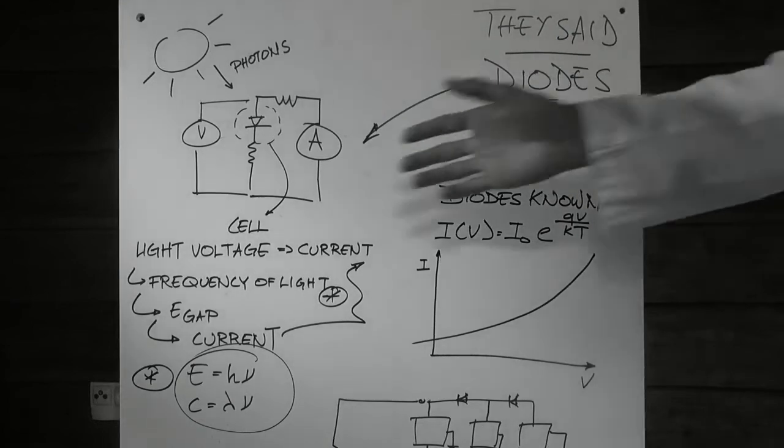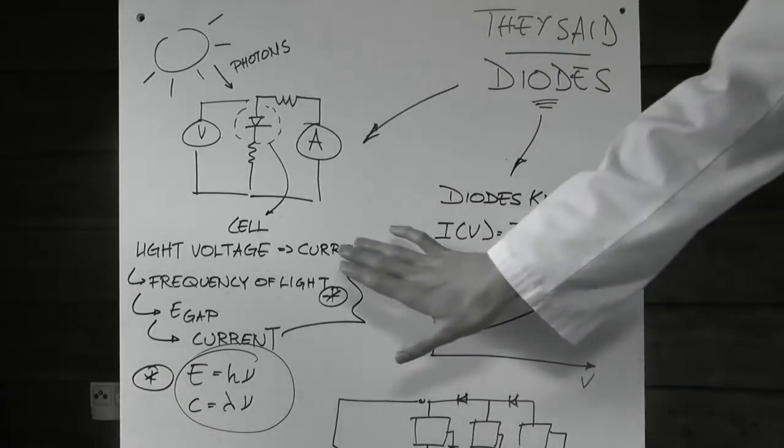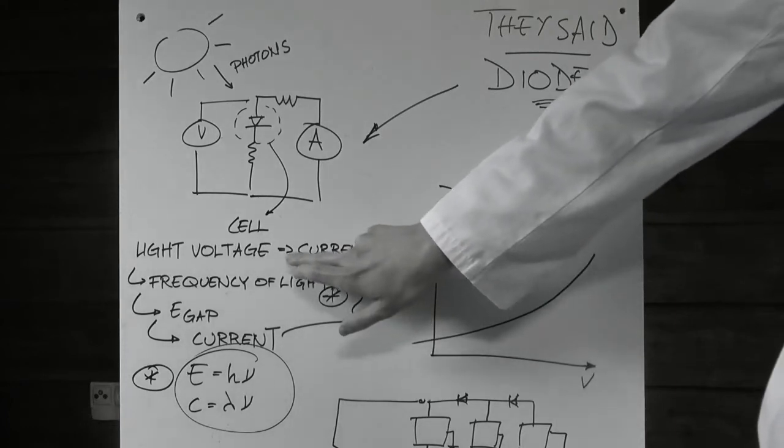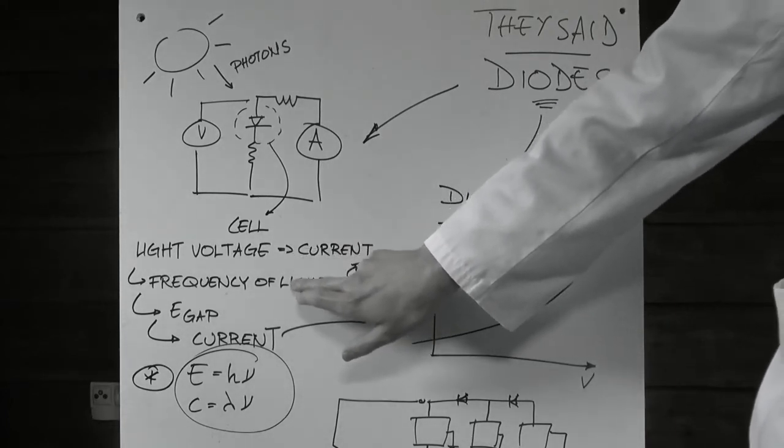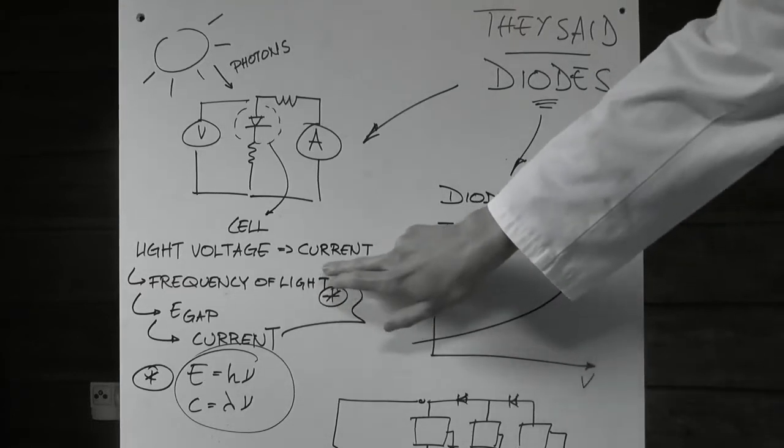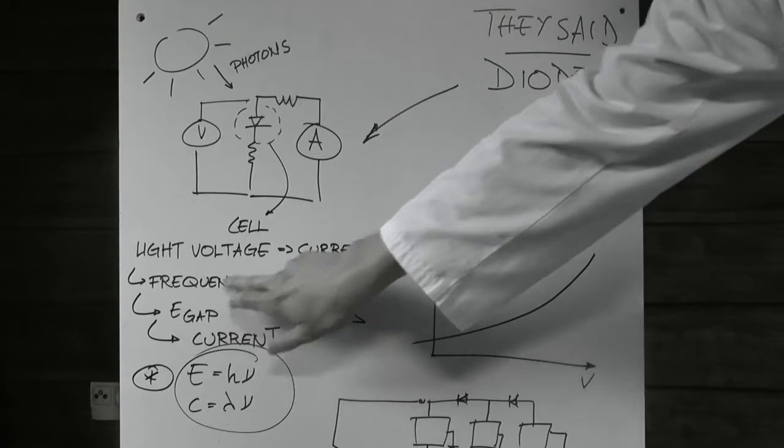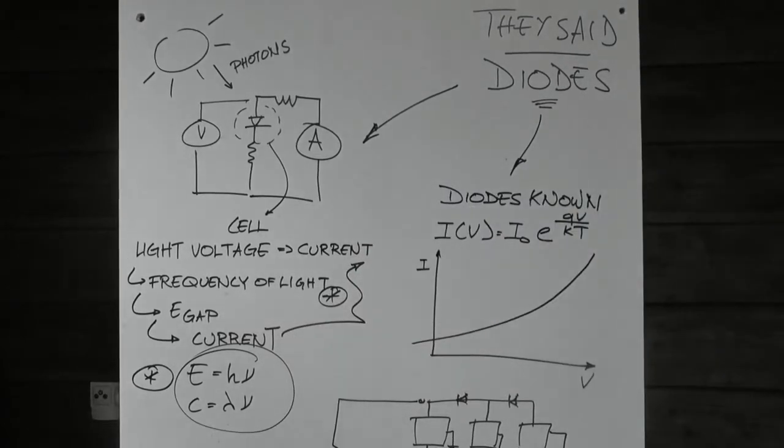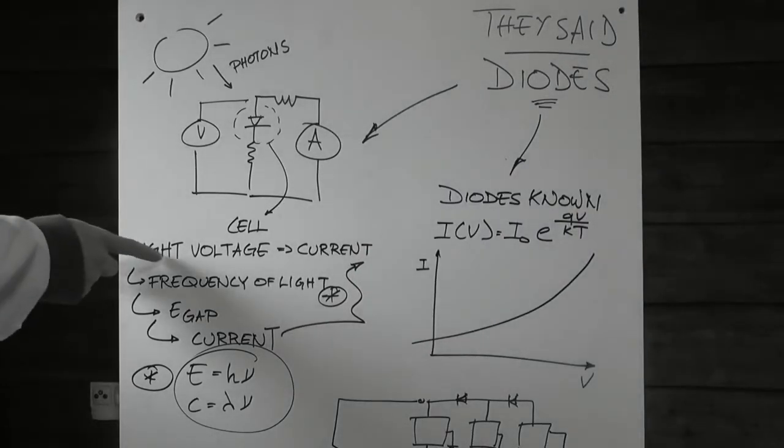In fact, according to me, you have to lighten it to produce current. Well, to make it work, we need a light voltage. This voltage will be induced by the frequency of light. Yeah, that's it. It will allow electrons to cross the gap and then to produce current.